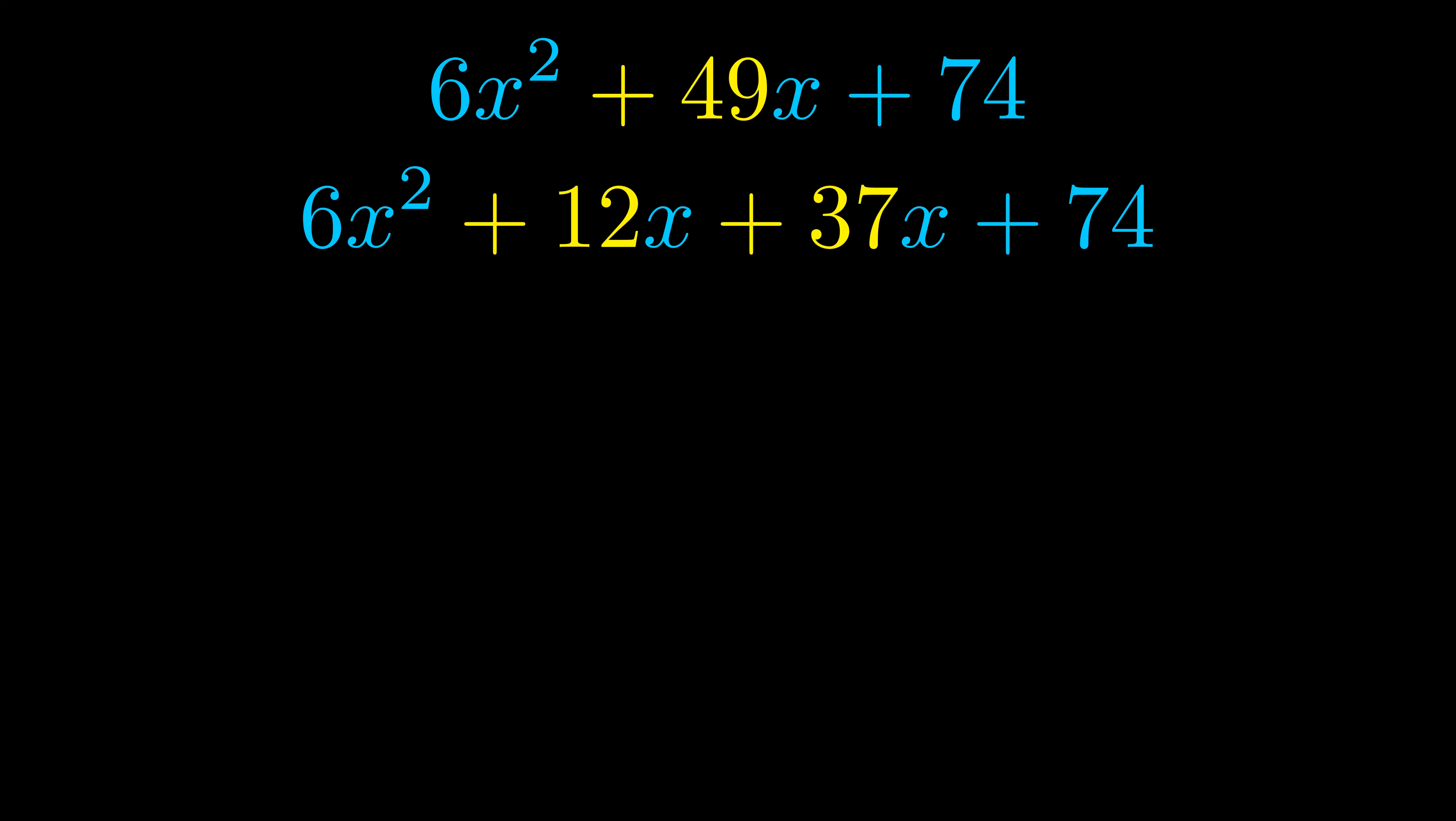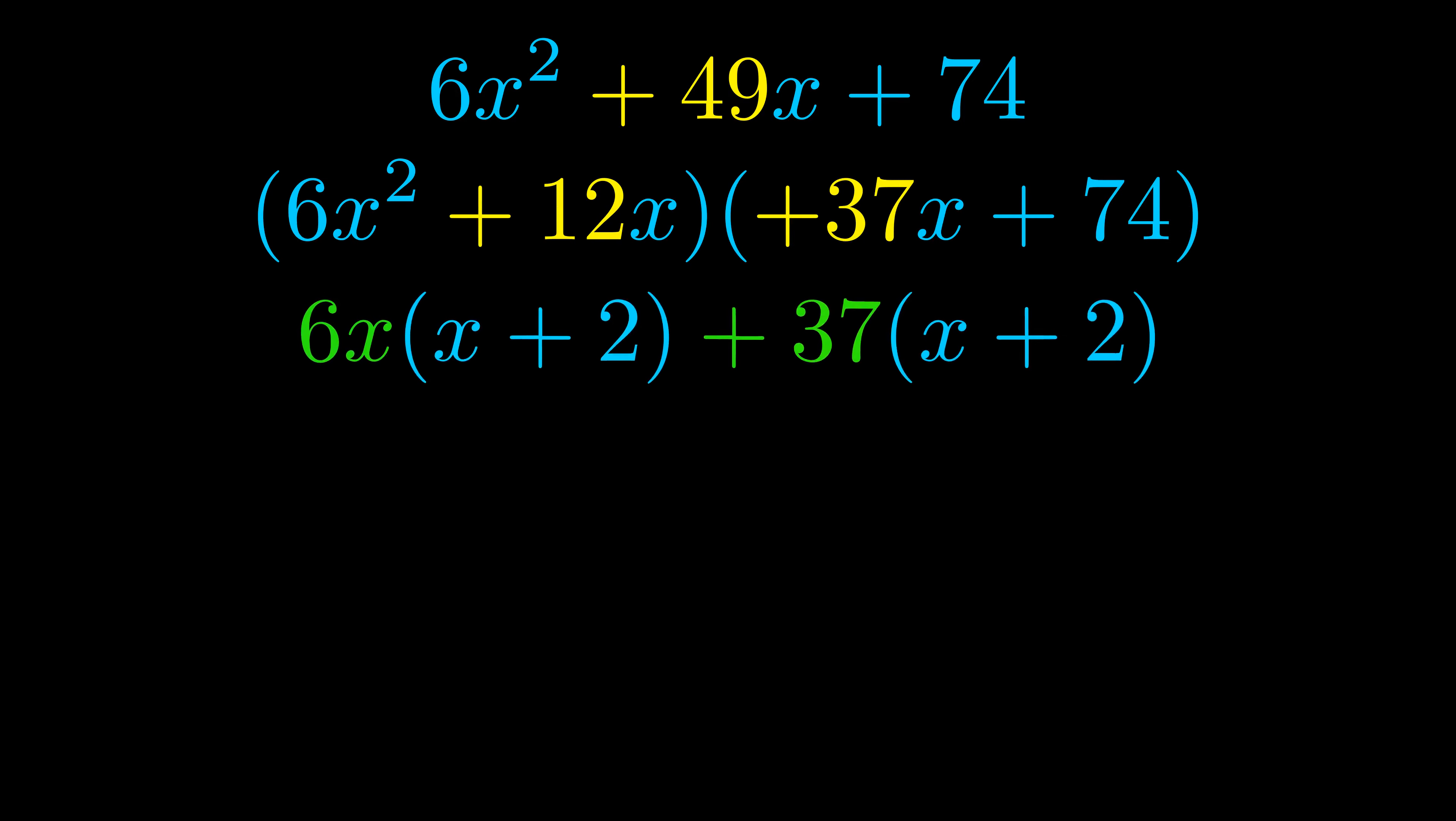Once we've done this we go ahead and we put parentheses around the first term and the last term and we do that so that we can take the greatest common factor out of both terms. We can see the greatest common factor is now outside in green. Notice also how what remains inside of the parentheses is the same in both cases. The blue values are the same.